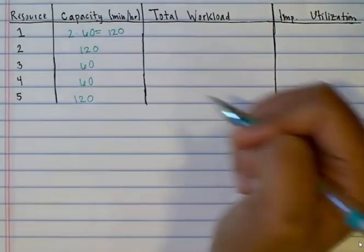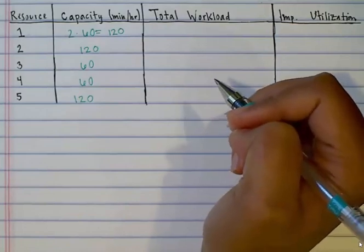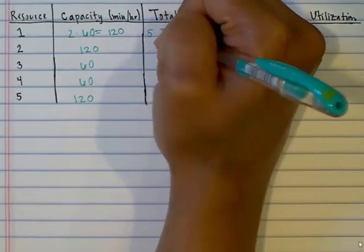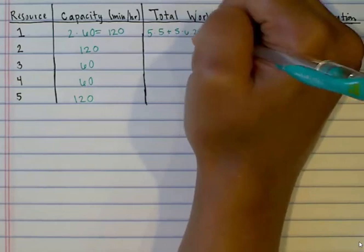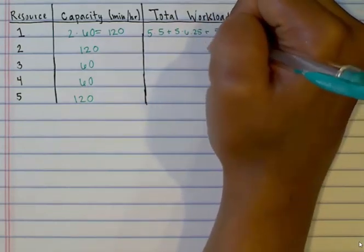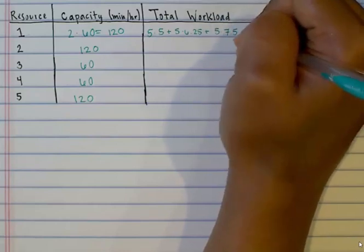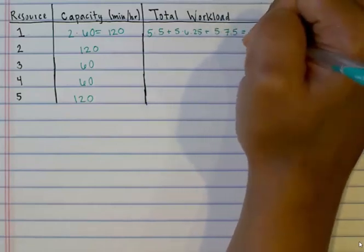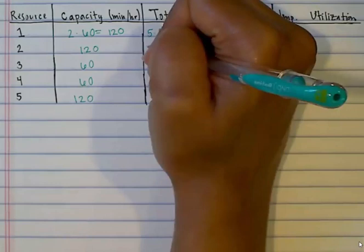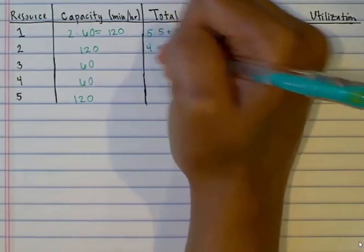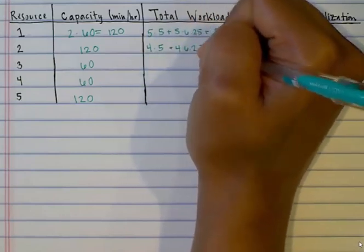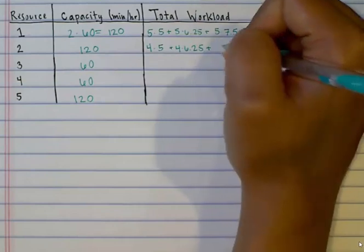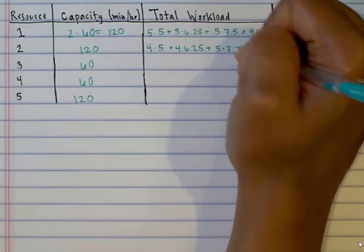Now let's calculate the total workload. For resource 1, the total workload is 5 minutes per unit for product A times 5 units per hour, plus 5 minutes per unit for product B times 6.25 units per hour, plus 5 minutes per unit for product C times 7.5 units per hour. For resource 2, the total workload is 4 minutes per unit for product A times 5 units per hour, plus 4 minutes per unit for product B times 6.25 units per hour, plus 5 minutes per unit for product C times 7.5 units per hour.